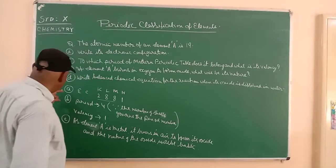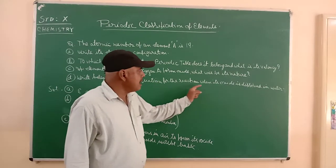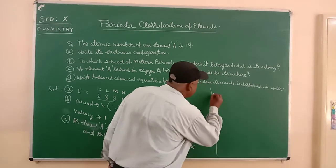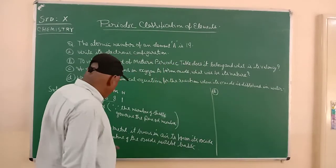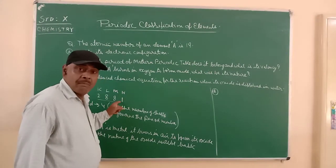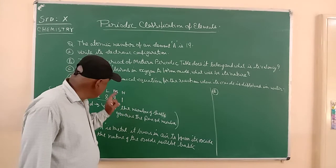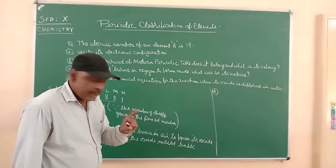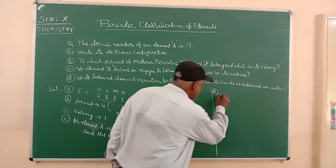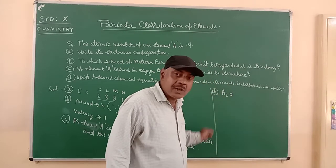Now we are coming to the last point: write the chemical equation when its oxide is dissolved in water. What will be the formula? It is belonging to group 1 because it has 1 electron in the outermost shell. Thus it will have a valency of 1. It is reacting with oxygen, so the formula of this oxide will be A2O.